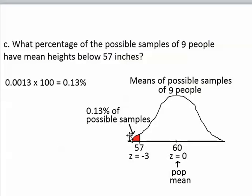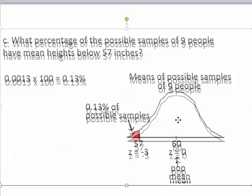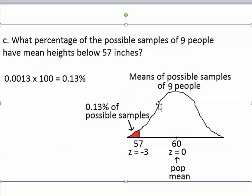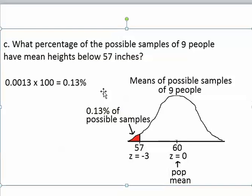And you can see the shape of the normal curve outlining the sampling distribution. When you go to the z-table, you're actually using the shape of the normal distribution curve to get the probability. So this probability that we found here is actually based on the shape of the normal distribution.